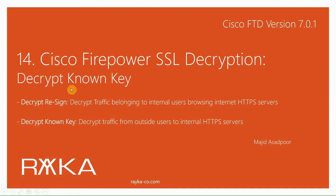In the last section, we implemented the decrypt-resign method where users inside the network browse all HTTPS SSL applications outside the network with the Firepower certificate. In this section, we implement the decrypt-known-key method, in which users from outside the network access our HTTPS SSL applications inside the network with the server's real certificate.